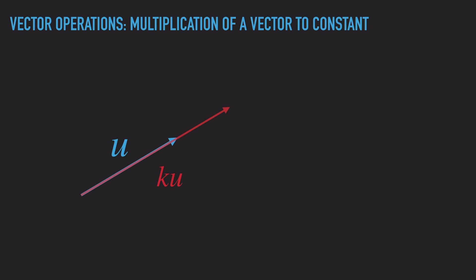We can't really change the direction of the vector by multiplying by a constant. If k is bigger than 1, then the red vector is going to be longer than the blue one. And if k is smaller than 1, then the red vector is going to be shorter than u. So essentially, multiplying a vector by a constant just changes the length of the vector. Let's look at this operation on a coordinate system to see it in more detail.